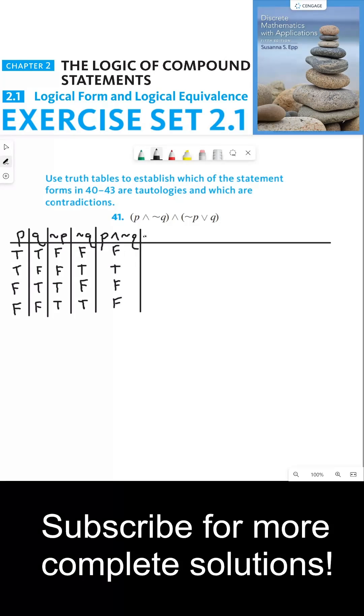Next we're going to do not P or Q. This is true if at least not P or Q is true or if they're both true.